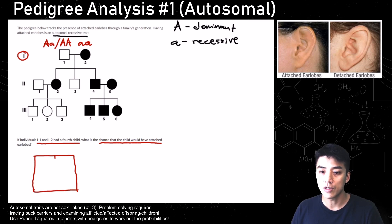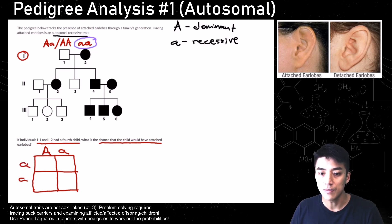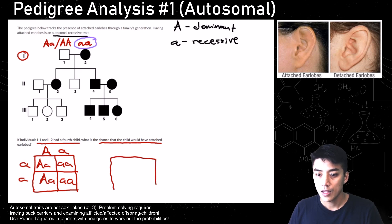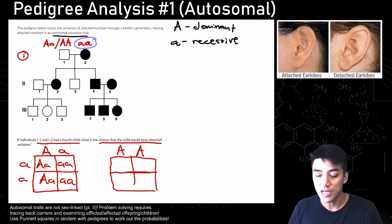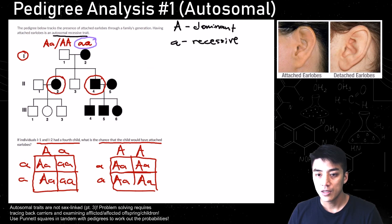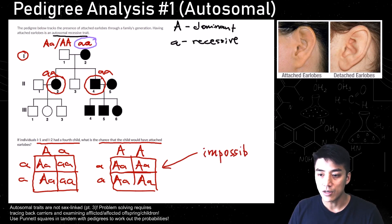In the first scenario, the father is heterozygous — big A, little a — and the mother is always little a, little a. We fill in the Punnett square. In the second scenario, the father is homozygous dominant for detached earlobes, big A big A, and the mom is little a, little a. All offspring would be heterozygous, meaning the trait wouldn't appear. But according to the pedigree, individuals 2,2 and 2,4 are homozygous recessive — so we can rule out that second scenario because those offspring types would be impossible.